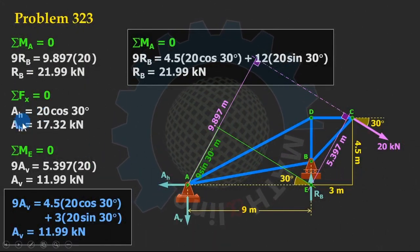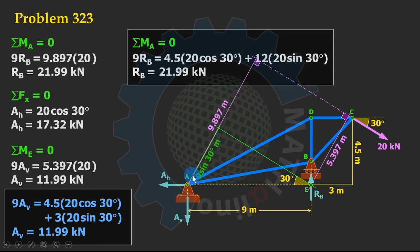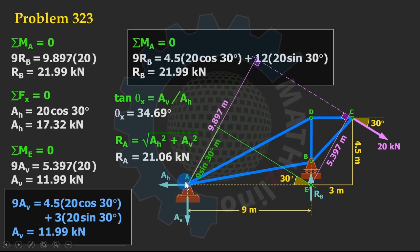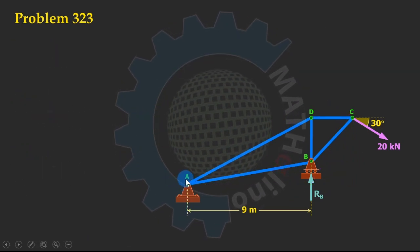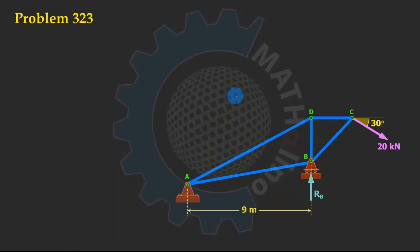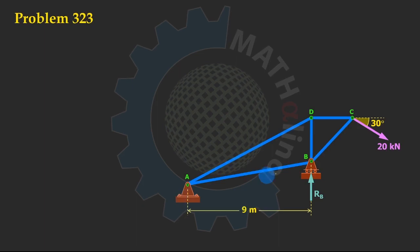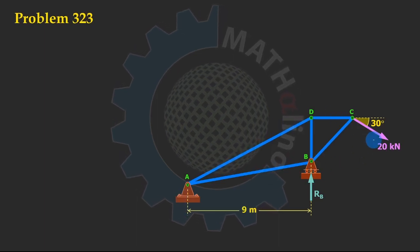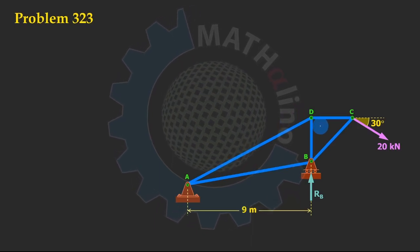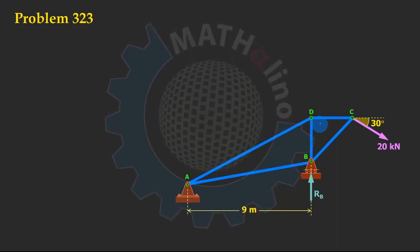We already have the values of AH and AV, so we can proceed with finding the direction of RA and its magnitude. For our last solution, we are going to use one of the fundamental principles of mechanics. Take note that we only have three forces here: the reaction at B, the total reaction at A, and the given 20 kN load.